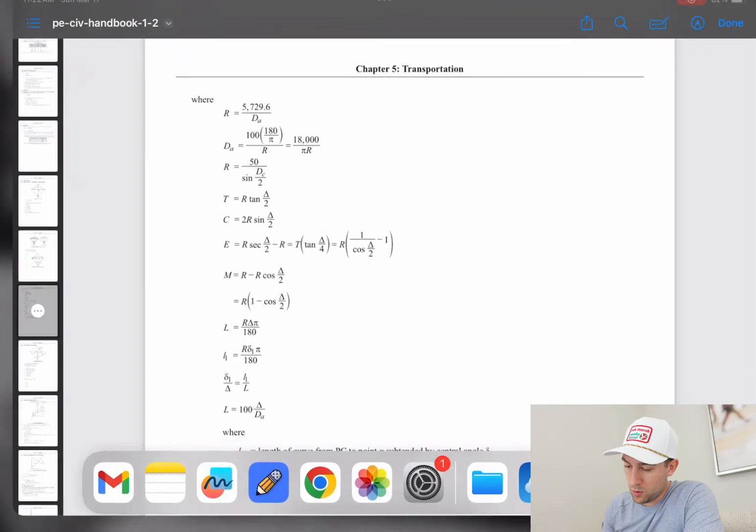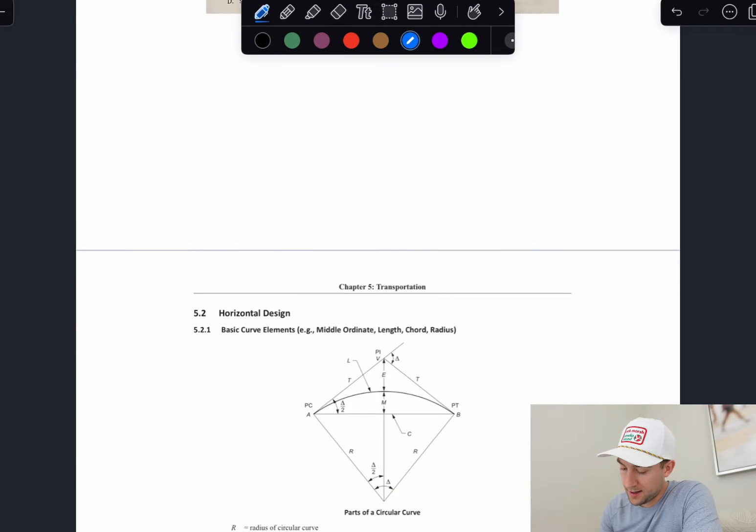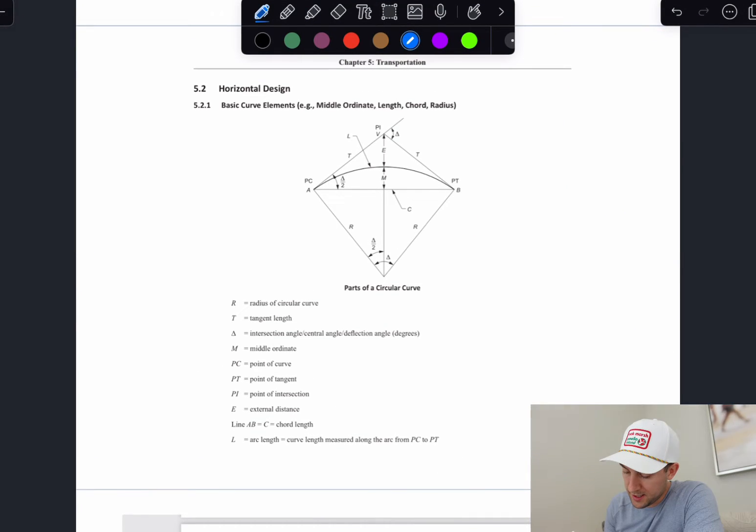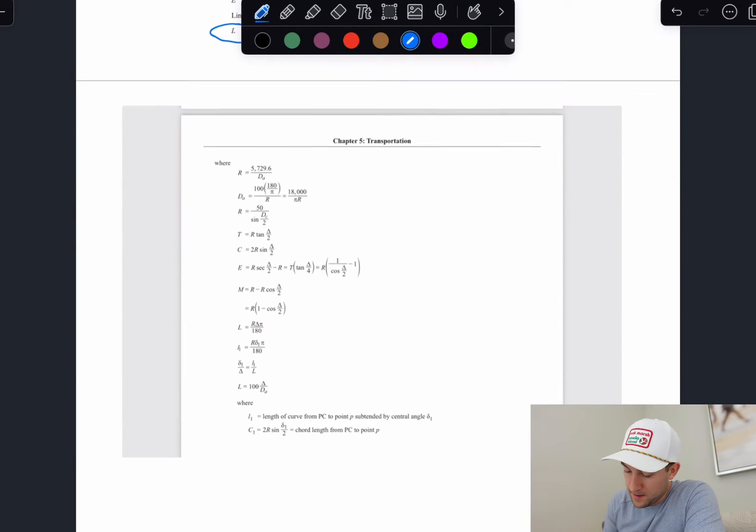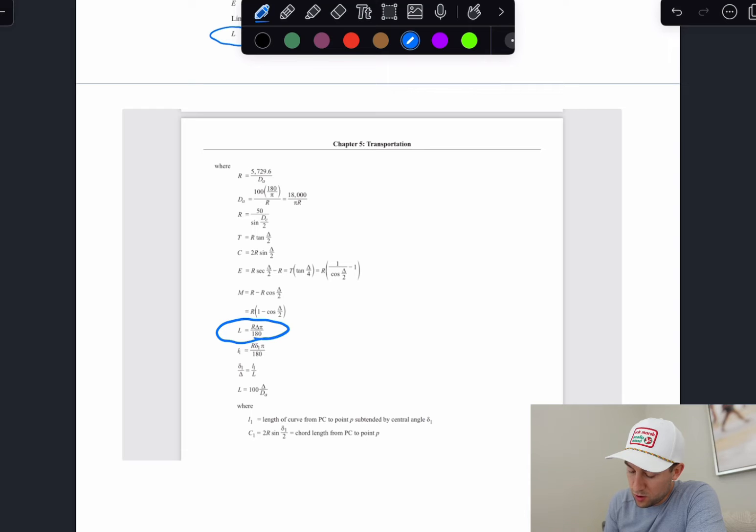So L equals R delta pi over 180. I'm going to go ahead and copy and paste that guy right over here. And again, it looks like we need to solve for L because that'll be this curve along there because we're trying to find that point. We already have PC. We need to find L and then we'll walk through the knowns that we have.